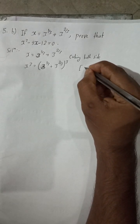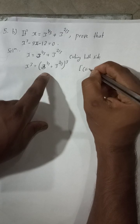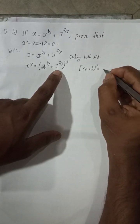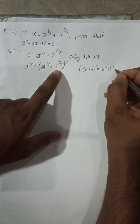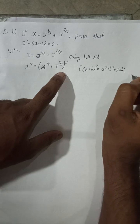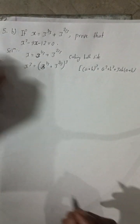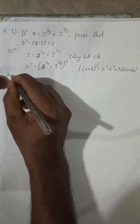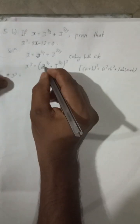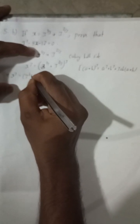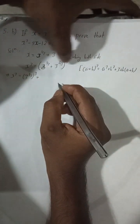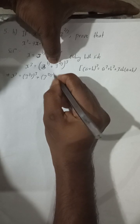Now we will apply the formula: a plus b whole cube is equal to a cubed plus b cubed plus 3ab bracket a plus b. So x cubed equals a cubed — here a is 3 to the power 1 by 3 — whole cube, plus b cubed — here b is 3 to the power 2 by 3 — whole cube, plus...